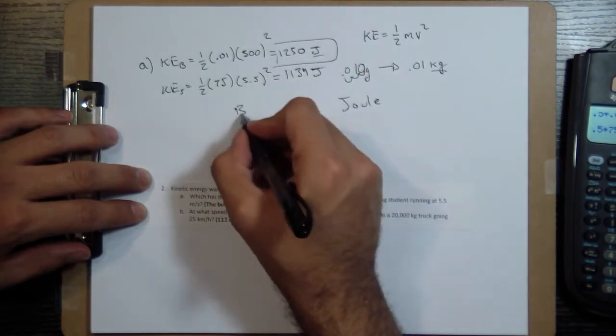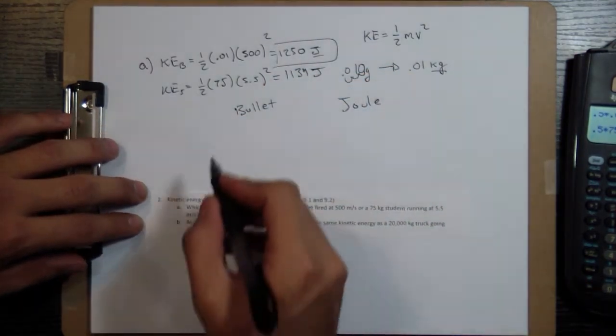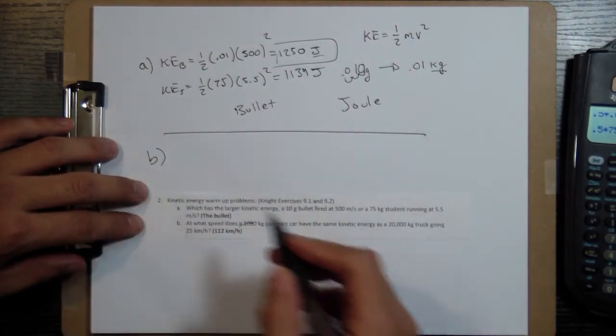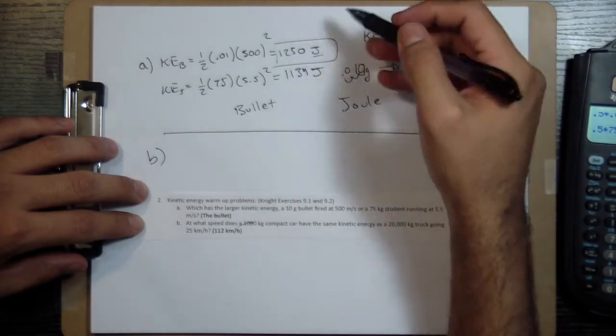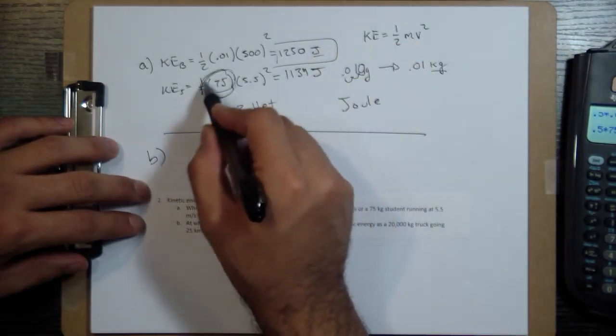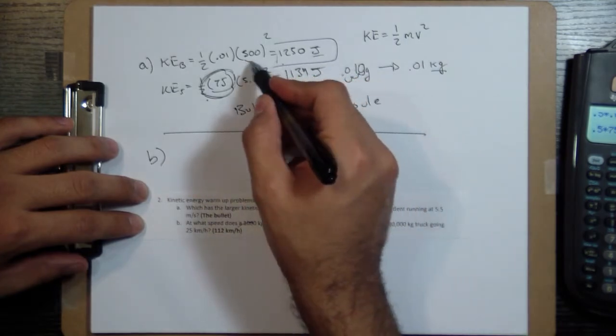So this one has more energy, the bullet has more energy. And notice that even though they have similar amounts of energy, the student's getting most of its energy from having a lot of mass, while the bullet gets a lot of its kinetic energy from having a lot of speed.